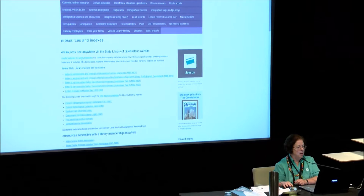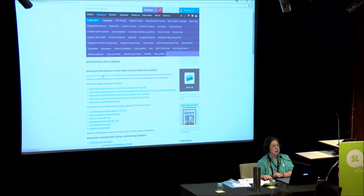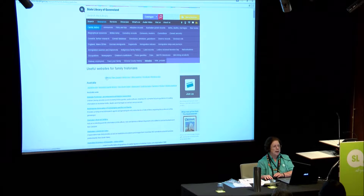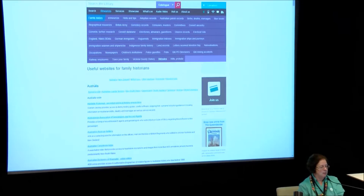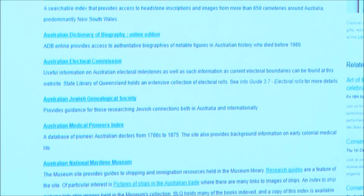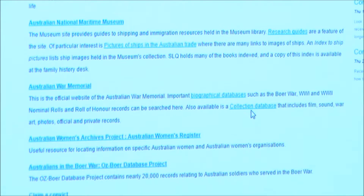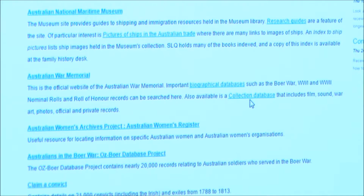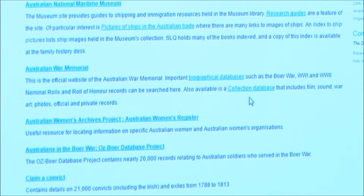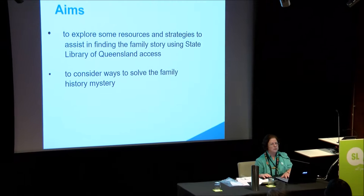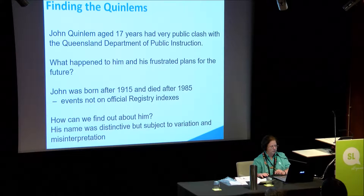It's worth having a look at that page and going through our useful websites. The most recent one we've added is the GRO Online UK. You can see how it's sorted by countries and research aids, and within each one are links. For example, Australian National Maritime Museum — pictures of ships, research guides. We've got biographical and collection databases under the Australian War Memorial. Under Queensland State Archives, we have links to the guides, the archives, and to their indexes.